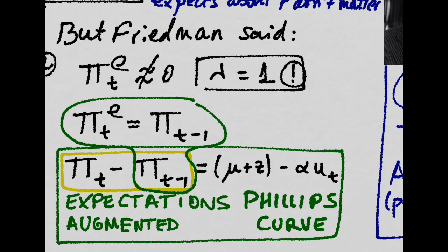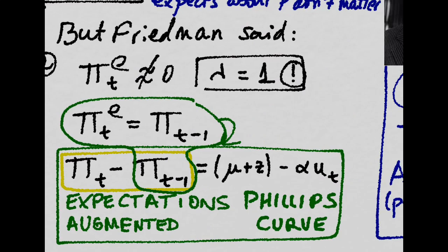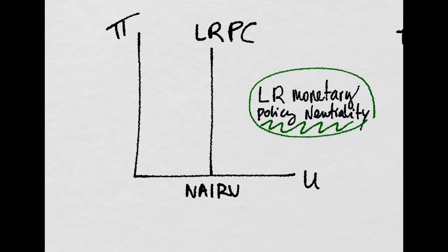With lambda equal to one, we will actually have a new expectations-augmented Phillips Curve. Now, Friedman said that what happens with the Phillips Curve is that, in the long run, it is just a vertical line.